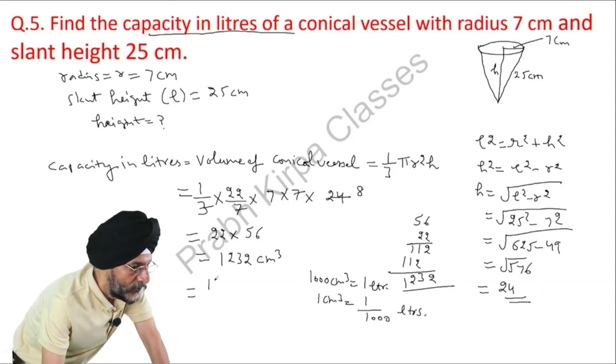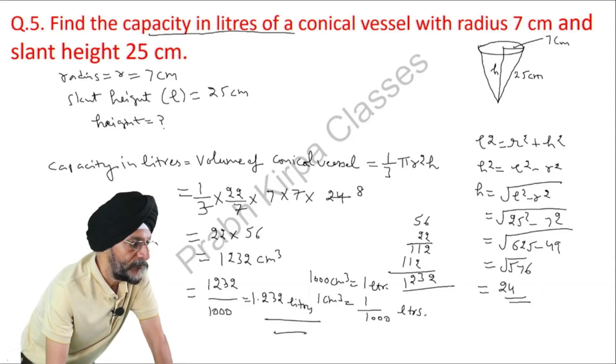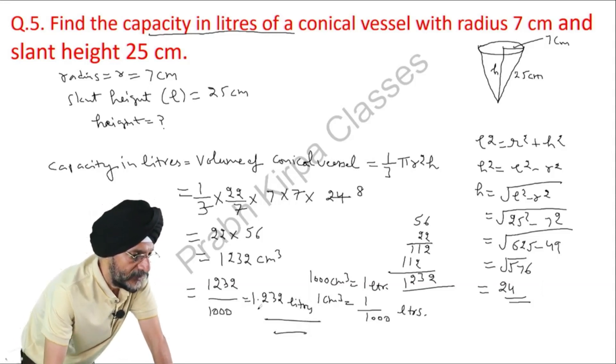So, here we will divide this value of cubic centimeter by 1000 and the answer will be 1.232 liters. This is the capacity of the conical vessel in liters: 1.232 liters.